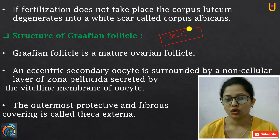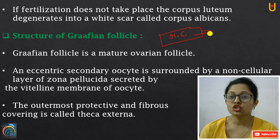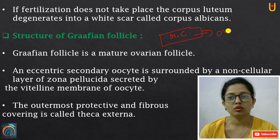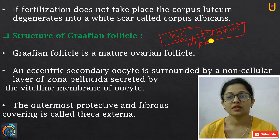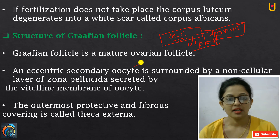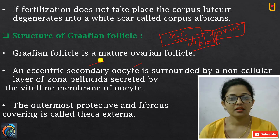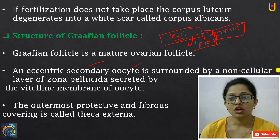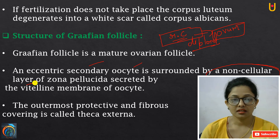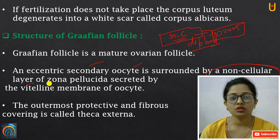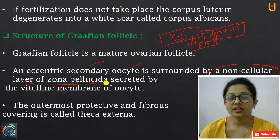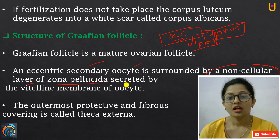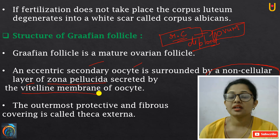When these oocytes are immature, we call them oocytes; when they are mature, we say it is an ovum. These secondary oocytes are covered with a non-cellular layer called Zona Pellucida, which is secreted from the vitelline membrane of the oocyte.